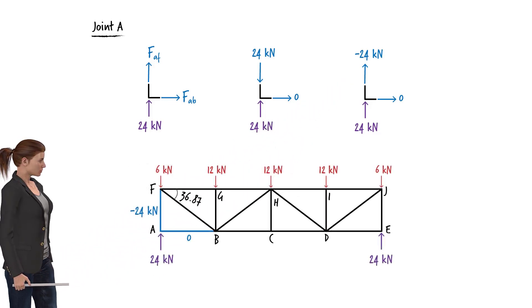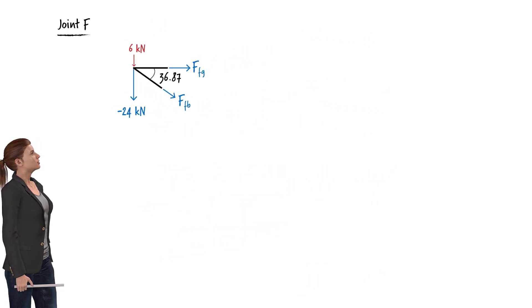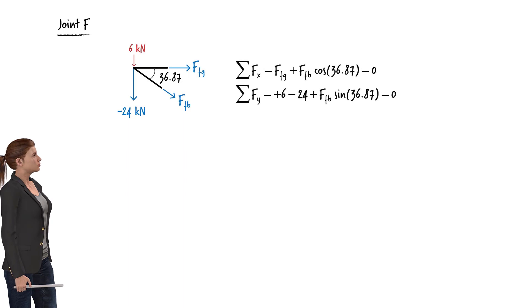Now we can turn our attention to joint F, since only two of the forces that are acting at the joint remain unknown. Here is the free body diagram of the joint. The joint equilibrium equations can be written and solved for the unknown forces.